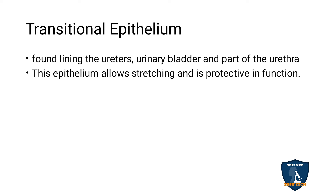Transitional epithelium is found in the lining of ureters, urinary bladder, and part of the urethra. This epithelium allows stretching — it is flexible and protective in function. Due to its transitional nature, the bladder can fill with urine and then return to its normal shape after urination. This stretching ability provides protection.